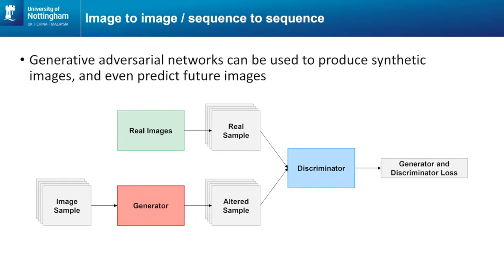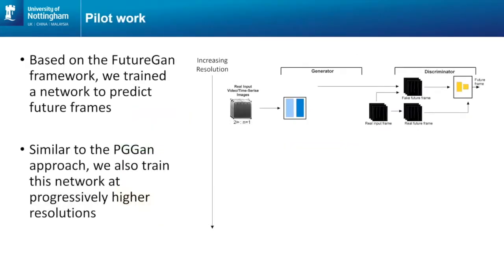We can produce synthetic images and even predict future images using this setup. The difference from a standard GAN is that we have multiple input images and multiple output images, and we're trying to produce a stack of outputs. The setup is based on FutureGAN, which is a piece of work that exists in the literature, and this in turn is based on something called PGGAN, which I will talk about in a moment.